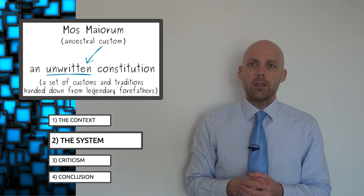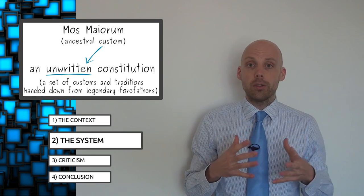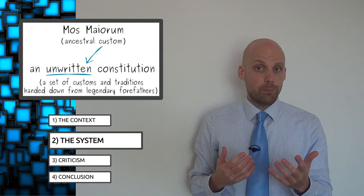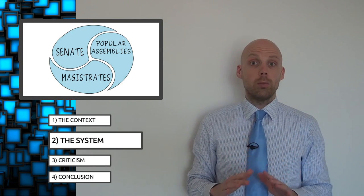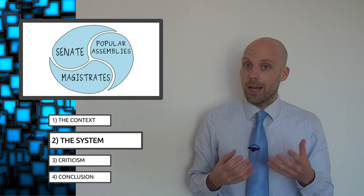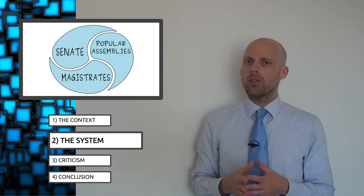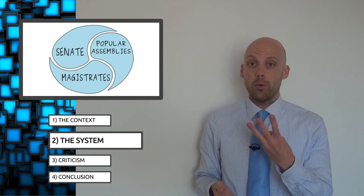The constitution was a part of that, and because it was unwritten, it evolved tremendously throughout the centuries. That being said, what the Roman constitution boiled down to at the height of the republic in the 3rd and 2nd centuries BCE was that decisions depended on collaboration between three groups.